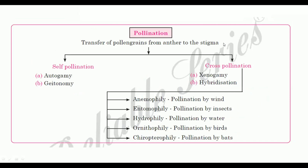Pollination has a lot of important questions. Make notes on self-pollination and cross-pollination. Pollination is the transfer of pollen grains from anther to stigma. Self-pollination includes autogamy and geitonogamy. Cross-pollination includes xenogamy and hybridization.